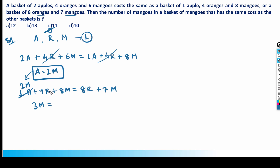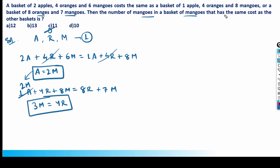From that equation: 2m + 8m - 7m = 4r, so 3m = 4r. Now I can express the cost of the basket entirely in terms of mangoes, since 3m = 4r. That's exactly what the question asks — the number of mangoes in a basket of mangoes that has the same cost.